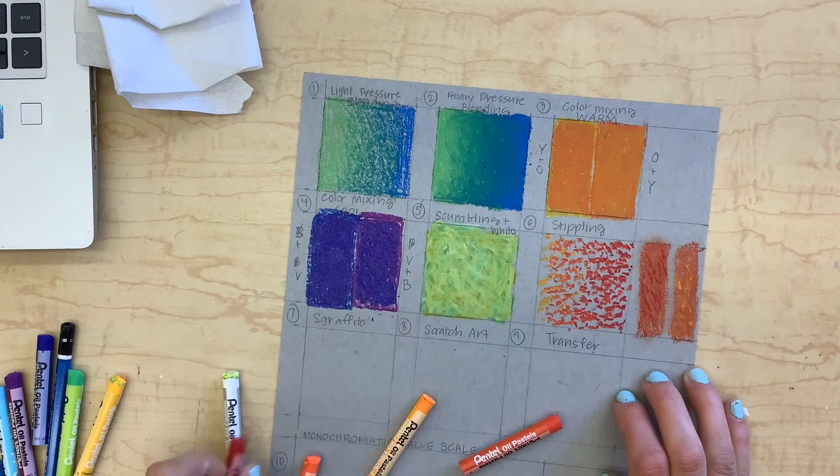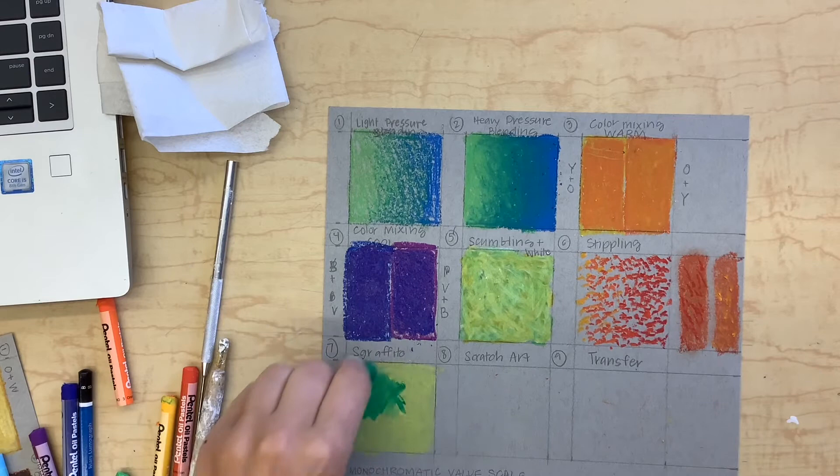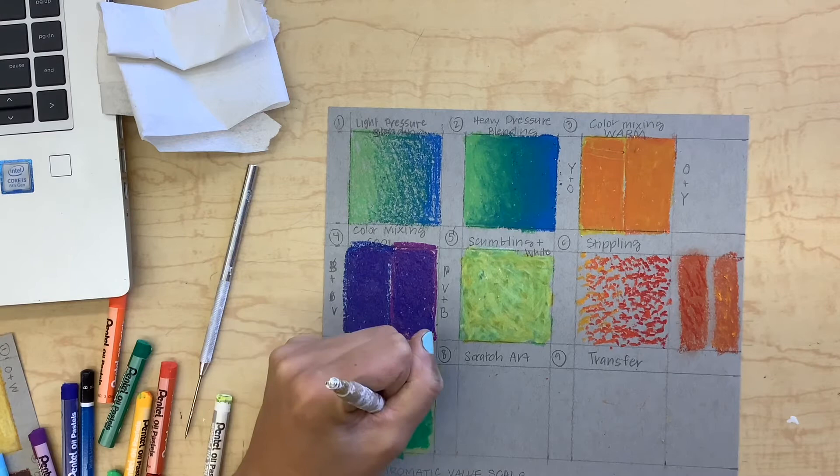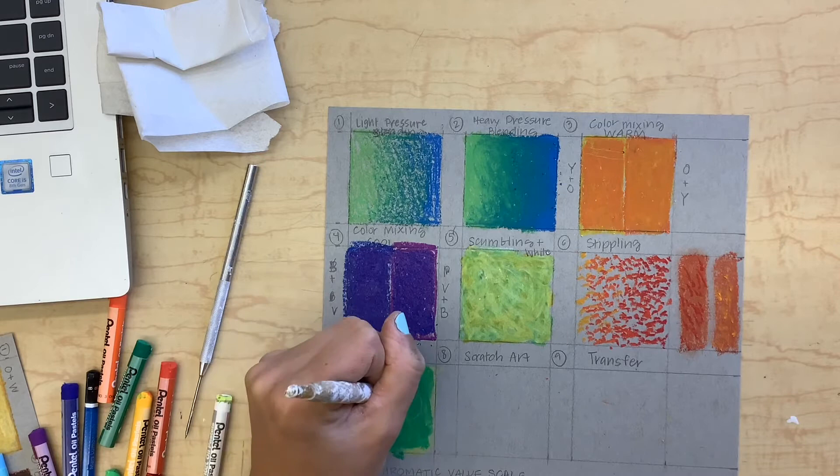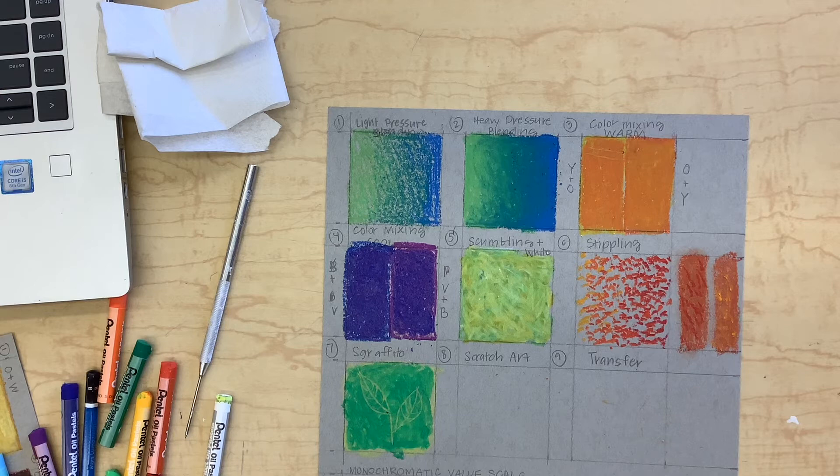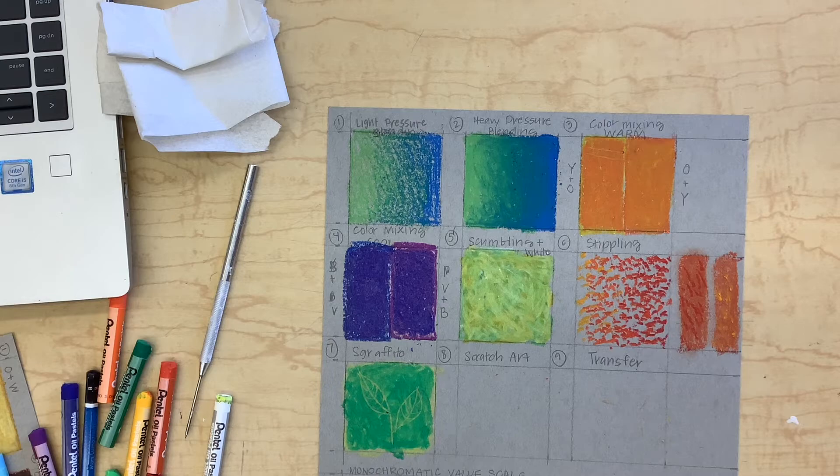Our next technique is sgraffito and this is where you add two layers of pastel and then you scratch away to add some designs or some texture. I added yellow and then green and now I'm carving in a little leaf pattern. You can do this with a paper clip or a butter knife or whatever works for you. There's many different things you can use.